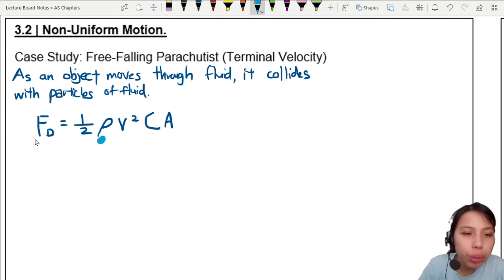Rho is density of the fluid. You're flying through air. How dense is the air?